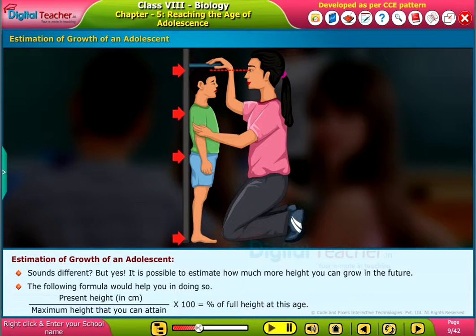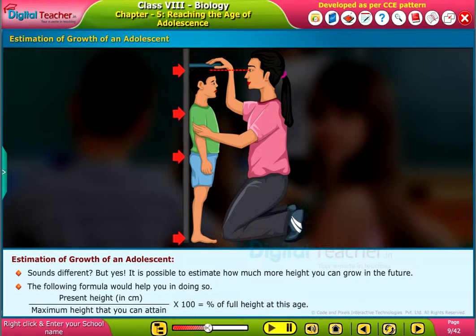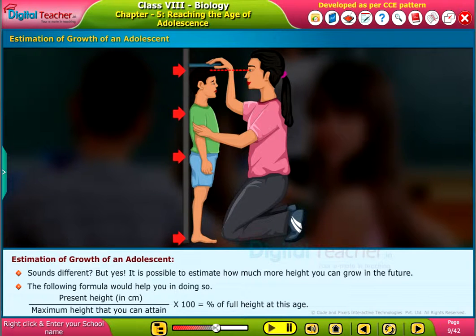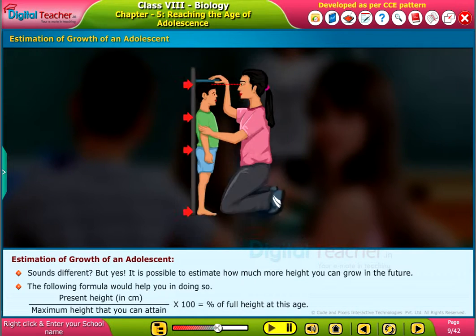The following formula would help you in doing so: present height in centimetres divided by the maximum height that you can attain, multiplied by 100, equals the percentage of full height at this age.